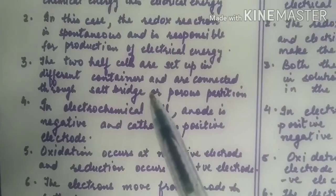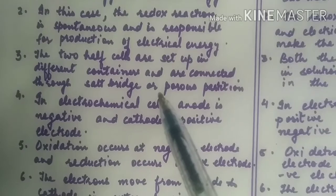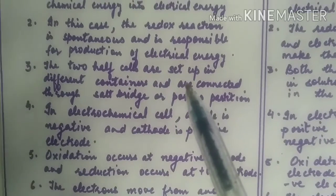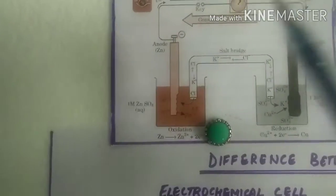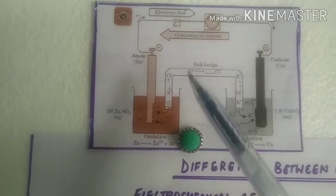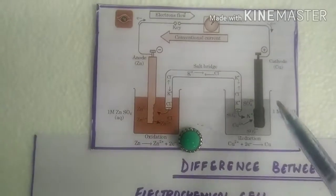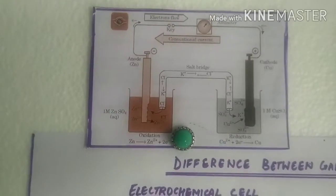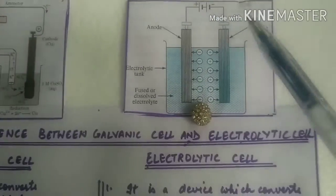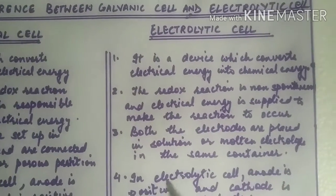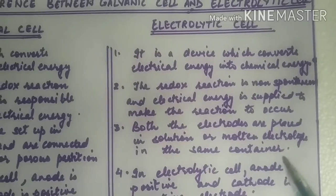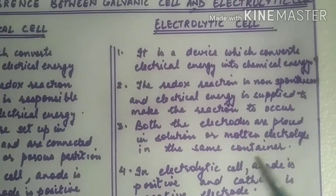The two half cells are set up in different containers and are connected through salt bridge or porous partition. So you can see this is the oxidation half cell, this is the reduction half cell, there are two separate half cells. In this case both the electrodes are placed in solution or molten electrolyte in the same container.